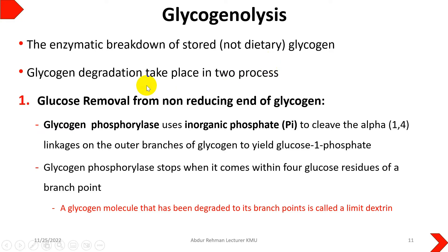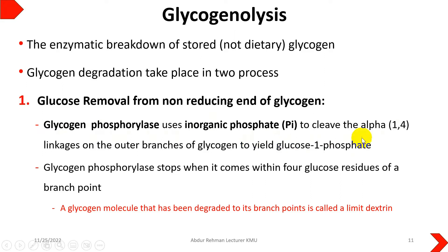The process of glycogen degradation takes place in two steps. The first is glucose removal from the non-reducing end of glycogen. Glycogen has a linear and branching structure. The enzyme glycogen phosphorylase uses inorganic phosphate to cleave the alpha 1,4 linkage from the outer branch, directly producing glucose-1-phosphate, which is then converted to glucose-6-phosphate and enters glycolysis.